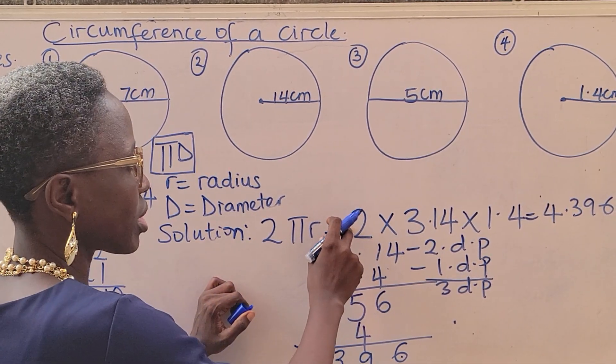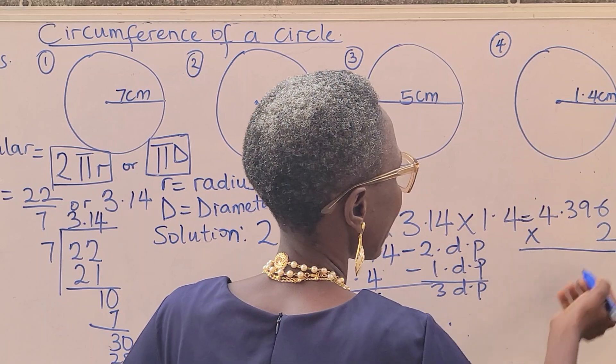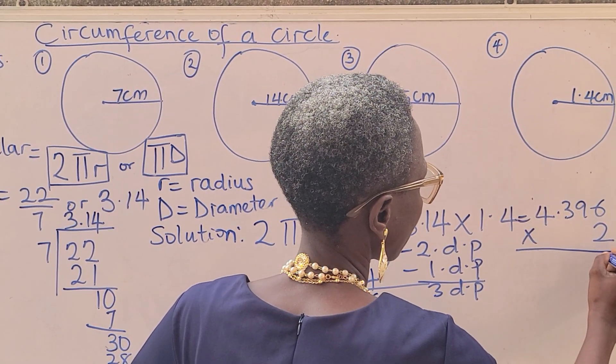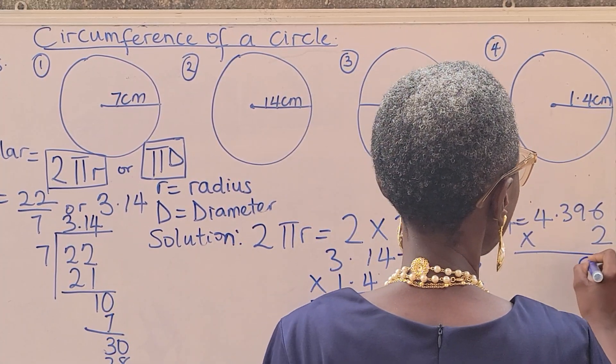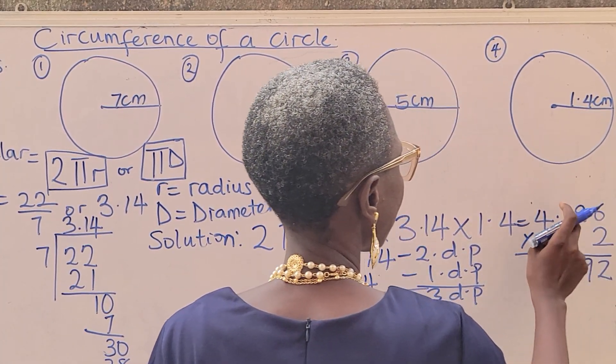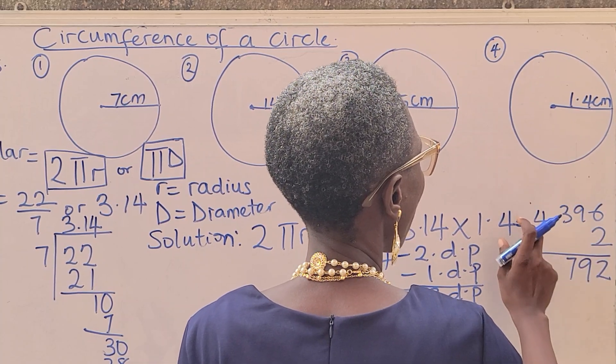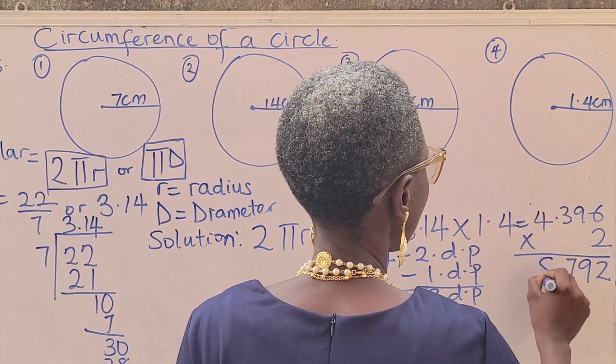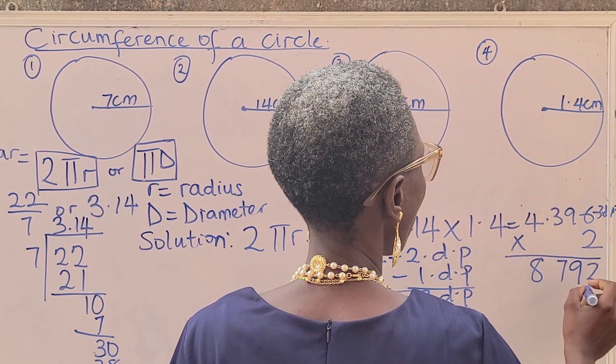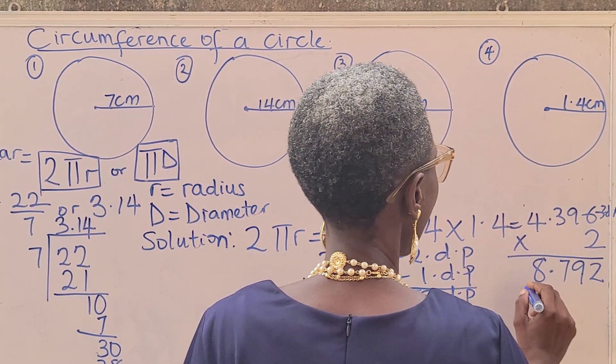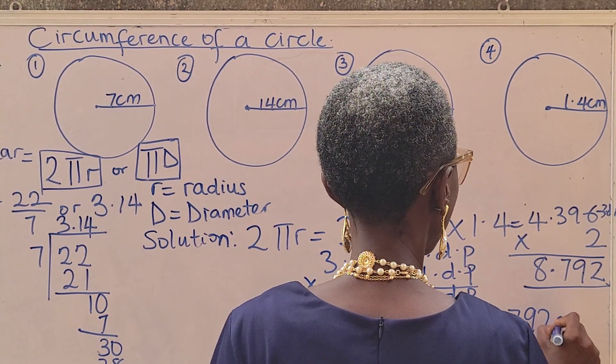Don't forget 2 is still here. Then we multiply it by 2. Let's multiply: 2 times 6 is 12. 2 times 9 is 18 plus 1, 19. 2 times 3 is 6 plus 1, 7. 2 times 4 is 8. This is 3 decimal places, so it's going to be 1, 2, 3. My answer is 8.792 centimeters.